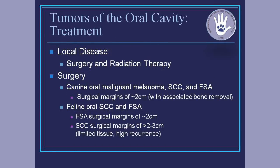For local disease, surgery and radiation are our two big local therapies. With melanomas, squames, and fibrosarcoma in dogs, we usually try to go about two centimeters with these tumors if possible. Associated bone removal is pretty much a must. The analogy I use with clients is like peeling a price tag off something at the store — you leave all the sticky stuff behind on the bone. You have to take anything that's touching, you have to take that associated bone, to really prevent quick recurrence.